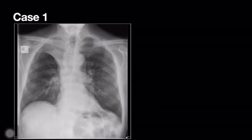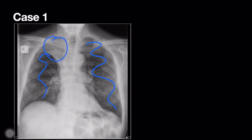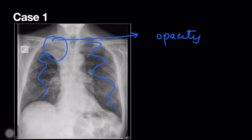So you have a radiograph — let's try reading it. What is the abnormality that you see? You can pause for a moment, look at it and come to a conclusion. Comparing both lung parenchyma, you can see the left lung appears fairly normal. On the right side, you can see an opacity — so there is a pathology in the form of opacity.